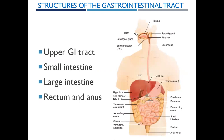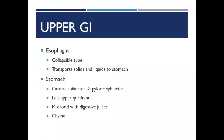We have our upper GI tract, which is going to contain your mouth, your pharynx, your esophagus, and your stomach. And then we have our lower GI tract that contains our small intestine, large intestine, rectum, and anus. We're going to go over the anatomy and physiology of these. If you need more of a description, you can look it up in your book.